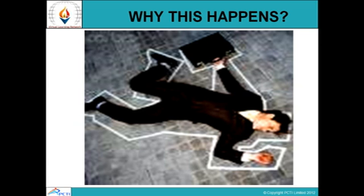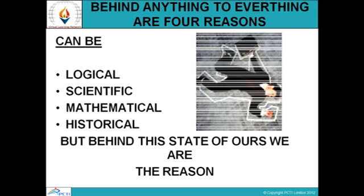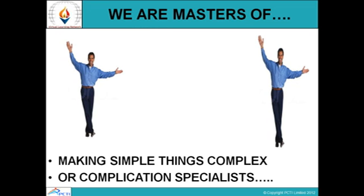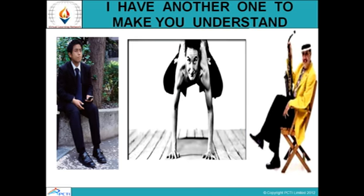Why does this happen? Behind anything and everything there are four reasons — logical, scientific, mathematical, historical — but behind this state of ours, we are the reason. We are the ones who create stress. That is why people become like this. We are the masters of our destiny, making simple things complex — complication specialists. Again, some people are shown doing various activities: a person standing with legs in the air, a person sitting, and a person relaxing with music. Remember, behind stress we are the reason, and we should know how to manage and control it — and not take stress at the cost of our health and happiness.